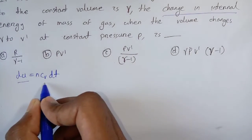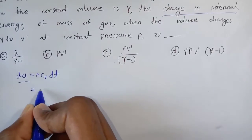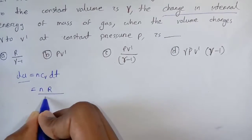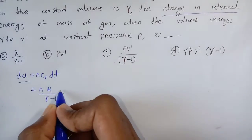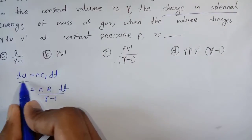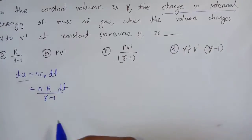हम जानते हैं, CV जो होता है वह R divided by (gamma minus 1) होता है। तो हमने internal energy को gamma की terms में convert कर दिया।